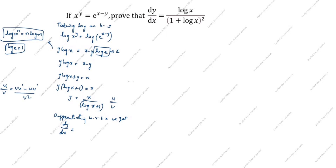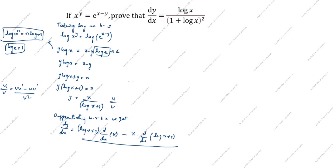Here u is x and v is (log x plus 1). Applying the formula: v is (log x plus 1) times d/dx of x, minus u which is x times d/dx of (log x plus 1), all divided by v squared which is (log x plus 1) squared.